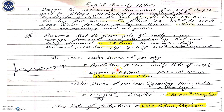The first step is to calculate how much quantity of water is needed per day. This is calculated as population × maximum daily rate of supply. Population is 50,000, multiplied by 1.8 (the peak factor) and by the rate of supply of 180 liters. So we get a value of 16.2 × 10⁶ liters, that is 16.2 million liters being supplied daily.